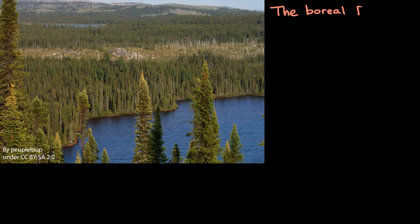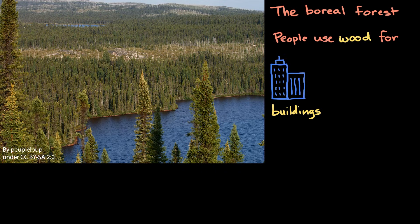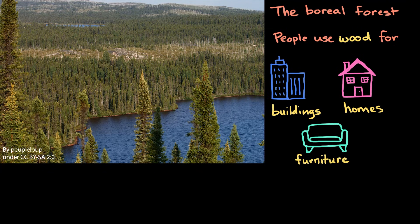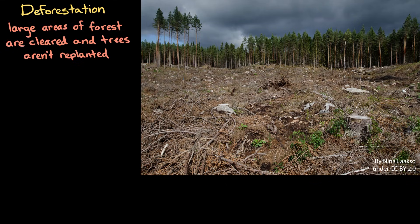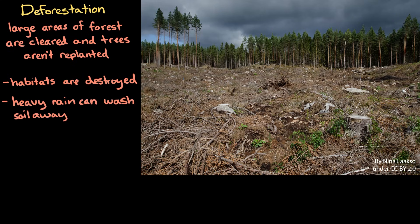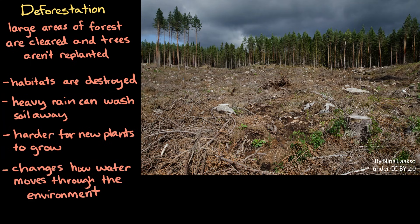Let's think back to the boreal forest. People use wood from boreal forest trees to make all kinds of things like buildings, homes, and furniture. Because of this, forests are often carefully managed for logging, where trees are harvested or cut down but then replanted. But in some cases, deforestation happens — large areas of forest are cleared and trees aren't replanted. When people cause deforestation, habitats that many species depend on are destroyed. And without tree roots to hold soil in place, heavy rain can wash it away, making it harder for new plants to grow and changing how water moves through the environment.